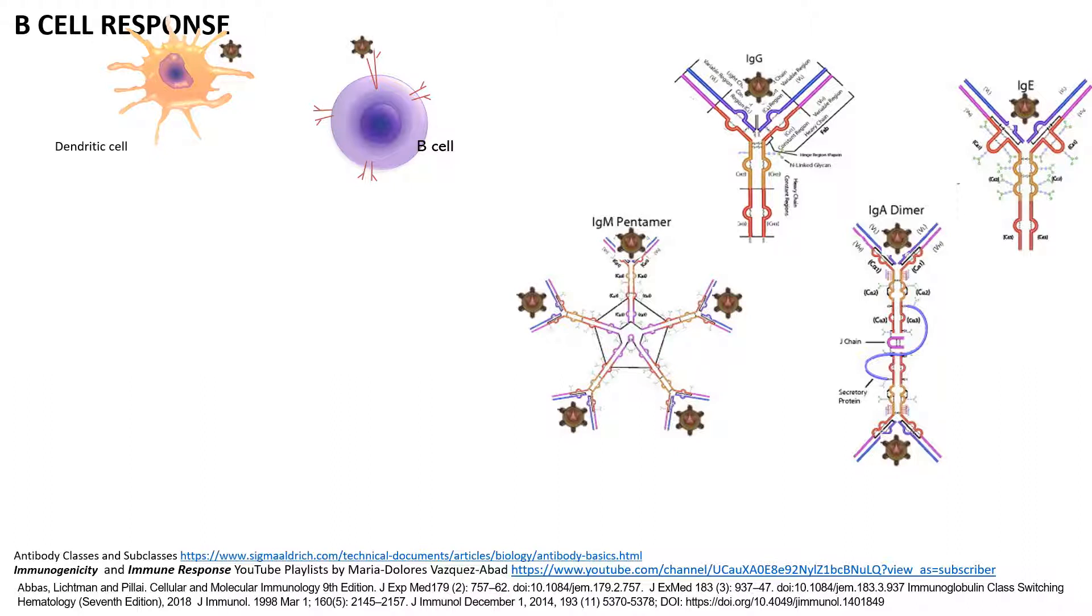In the presence of an antigen that is identified as a danger signal, these antibodies all have that specificity. They all bind, independently of the isotype class, the same antigen because the variable region is the same.